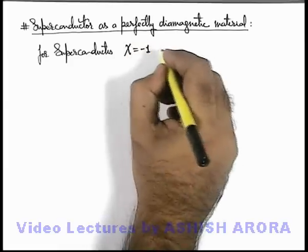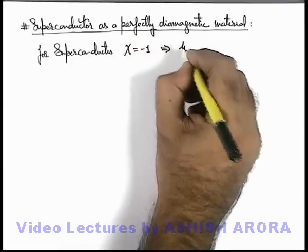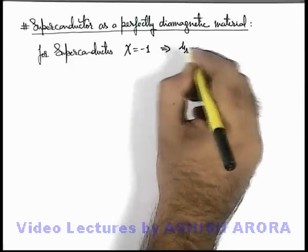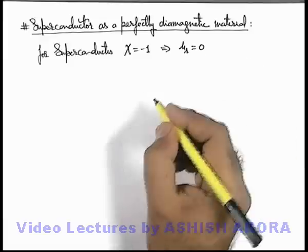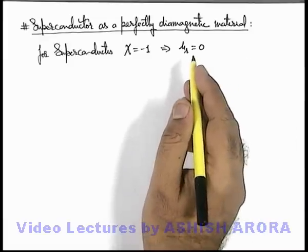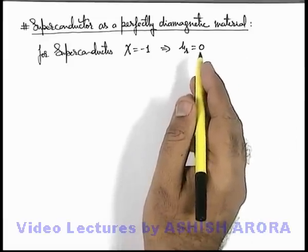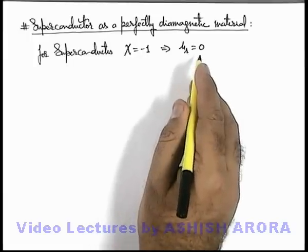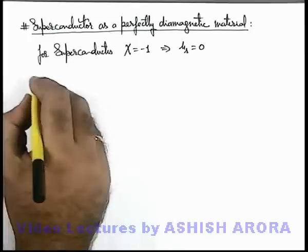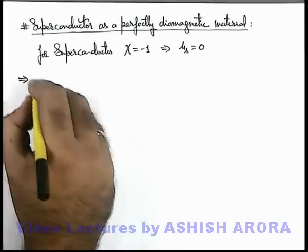If susceptibility for a material is minus one, this implies the magnetic permeability, relative permeability of the material, will be equal to zero. That means whenever an external magnetic field is applied on such a material, net magnetic field inside the material will always be zero. This implies that a superconductor...